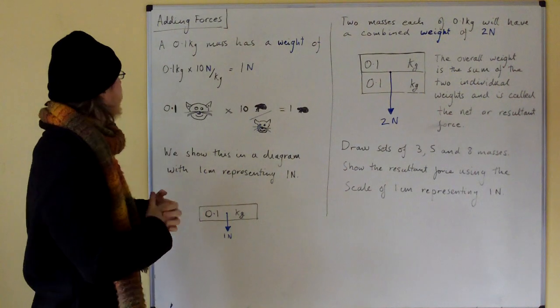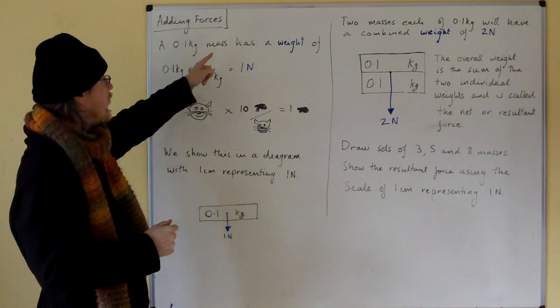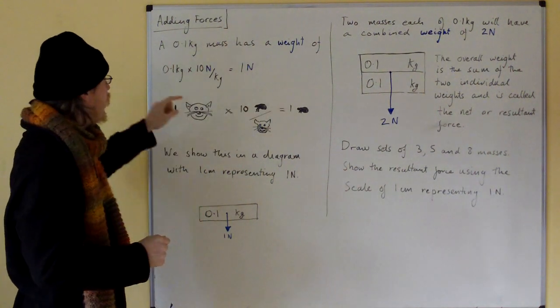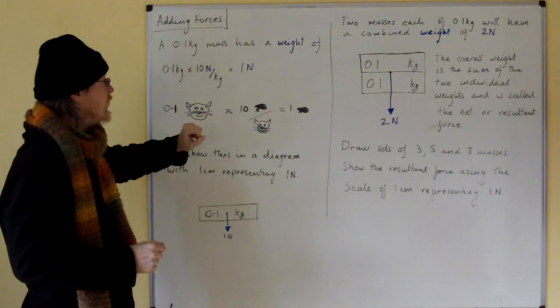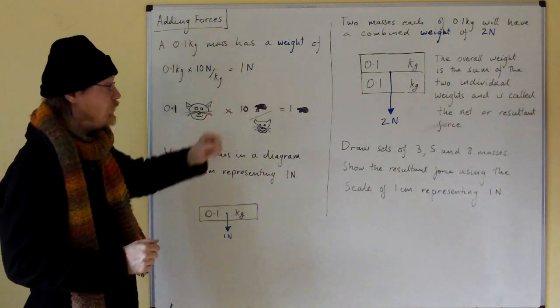Hi, adding forces. A 0.1 kilogram mass has a weight of 0.1 kilograms times 10 newtons for every kilogram gives us 1 newton.